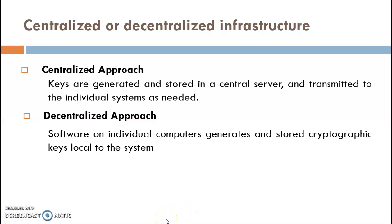For handling a key, there are two approaches: centralized and decentralized. In the centralized approach, keys are generated and stored in a central server or central device. When the end user needs the keys for encryption or decryption, they retrieve them from the central server. In the decentralized approach, software on individual computers generates and stores cryptographic keys locally. The keys used for encryption and decryption are stored in the local system rather than on a central server.